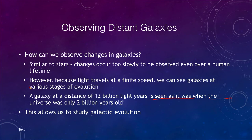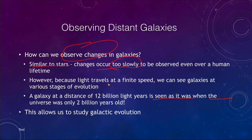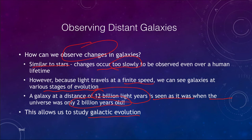One of the big problems in observing changes in galaxies is similar to what we had when we looked at stars — all of the changes occur far too slowly to be observed over a human lifetime. However, because light travels at a finite speed, we get to see galaxies at different stages in the past. We can look at a galaxy 12 billion light years away and see it as it was when the universe was only 2 billion years old, allowing us to study the evolution of galaxies over time.